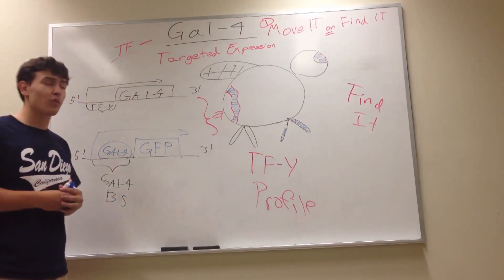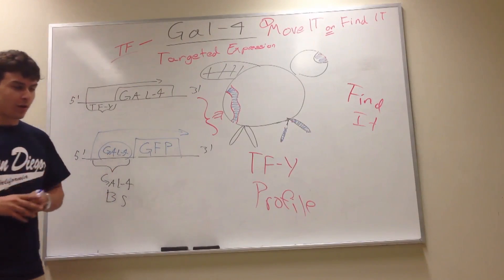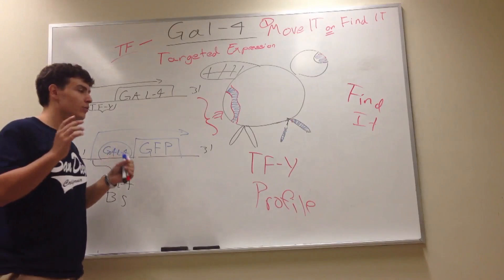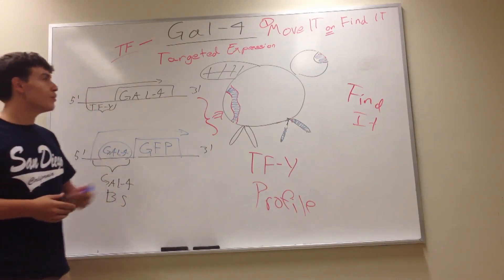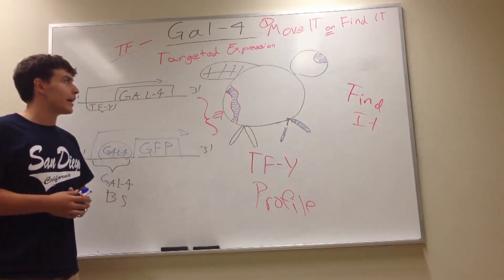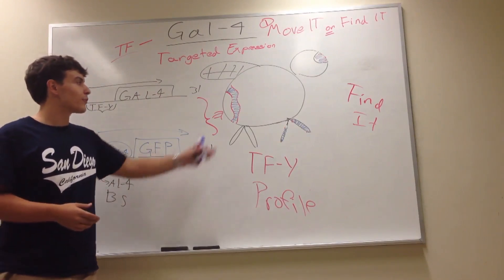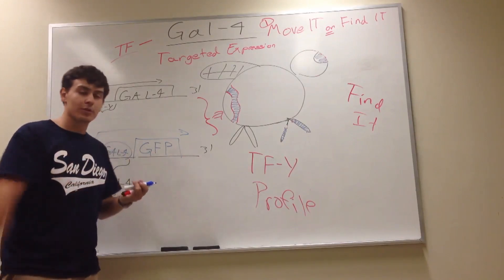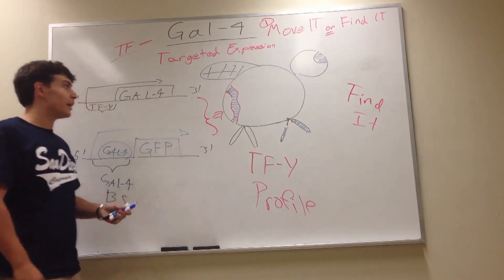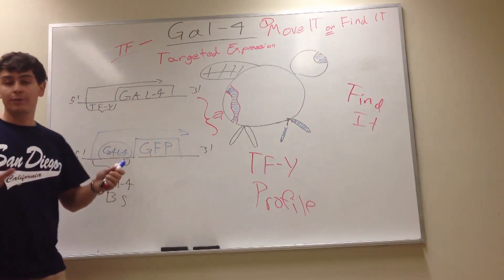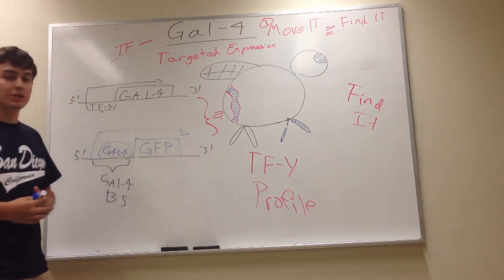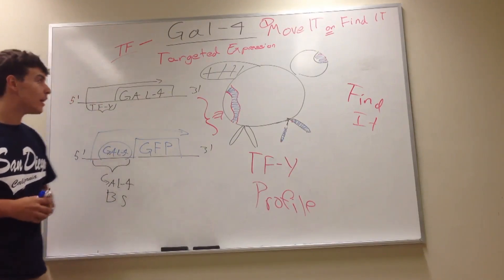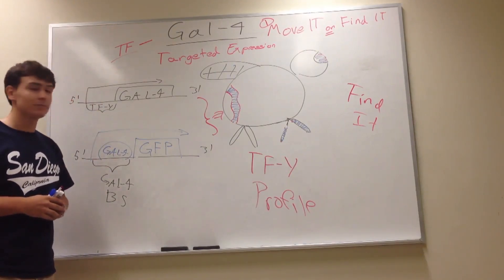Those are the two ways GAL4 is used throughout our book and our knowledge. Both of them are kind of complex, so make sure you go over and understand it. The move-it one is probably a lot more interesting and can be used more. For finding localization, I think it's a lot better to use in-situ hybridization or immunohistochemistry than doing this method — this is probably harder — but you never know what situation you may need to do this in. And that about covers it for now. I hope that was helpful. Thank you.